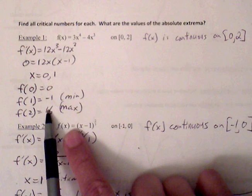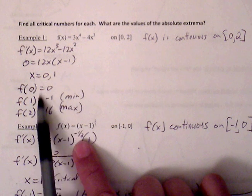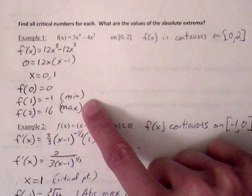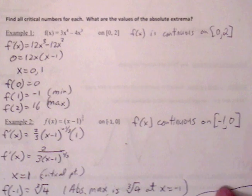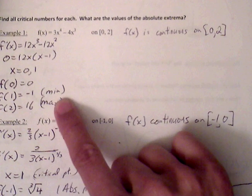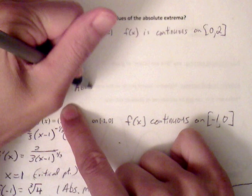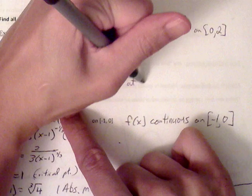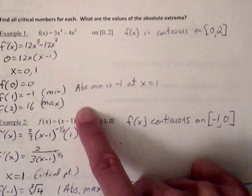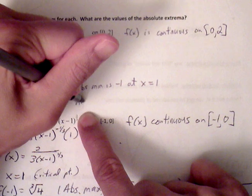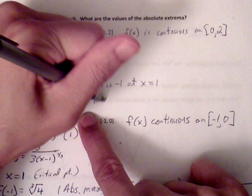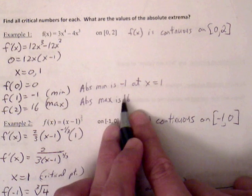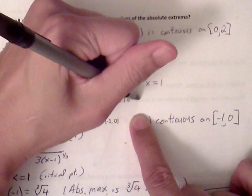These are guaranteed because we have a closed interval, and these are the only potential points that could be absolute max or absolute min. To be more specific, the absolute minimum is negative 1 at x equals 1, and the absolute maximum is 16 at x equals 2. Absolute min and absolute max refer to the y-value.